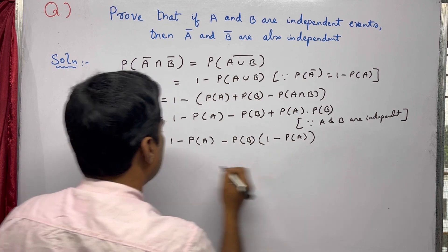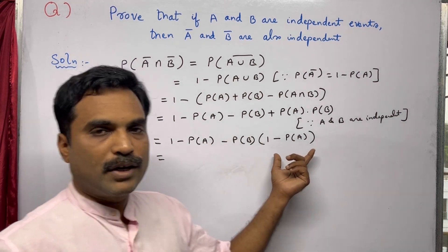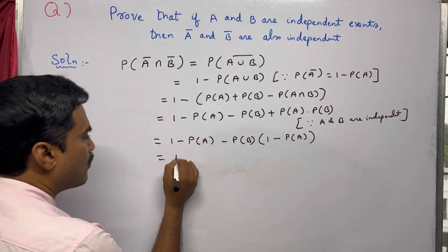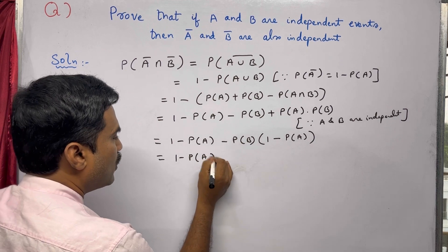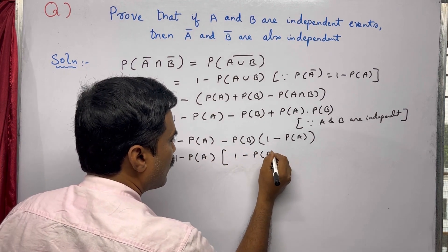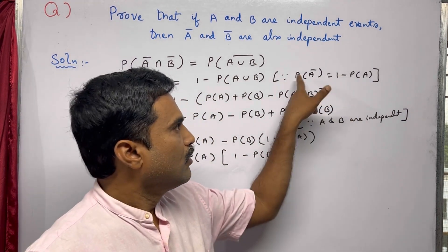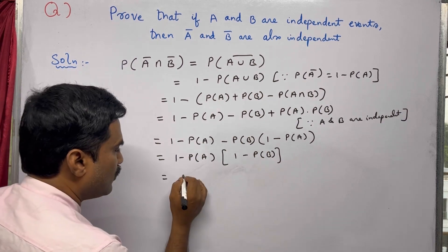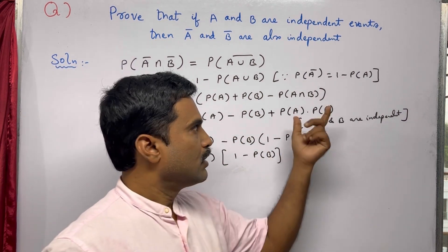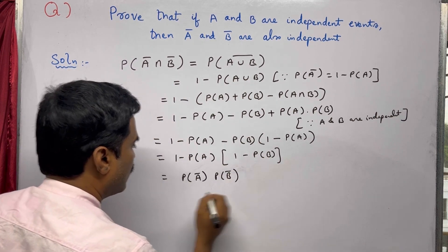Now observe that (1 − P(A)) appears in both terms. Take (1 − P(A)) as common, which is P(A-bar). This gives us (1 − P(A)) · (1 − P(B)). We can write 1 − P(A) as P(A-bar) and 1 − P(B) as P(B-bar).